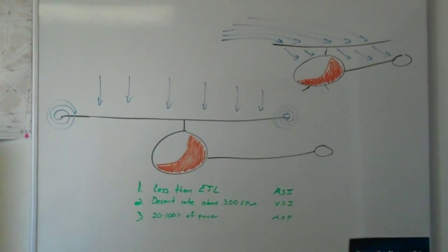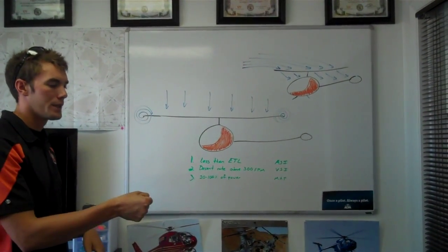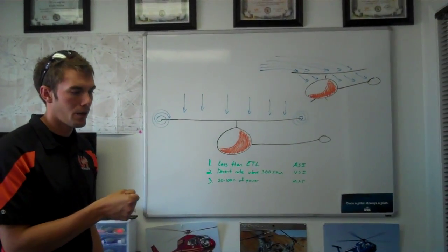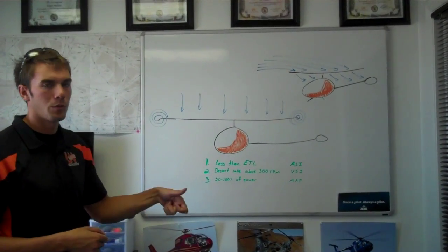So you're going to notice looseness on the controls. The recovery from this is basically forward cyclic and reduced power. Once you get back through ETL, then you can pull power in again.